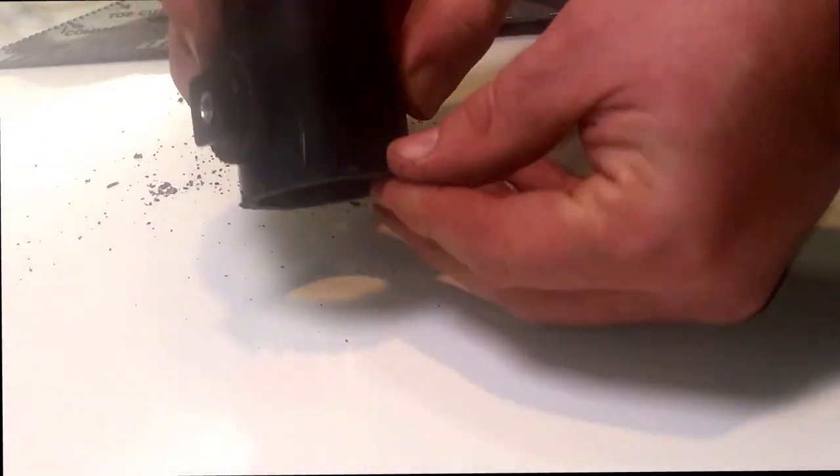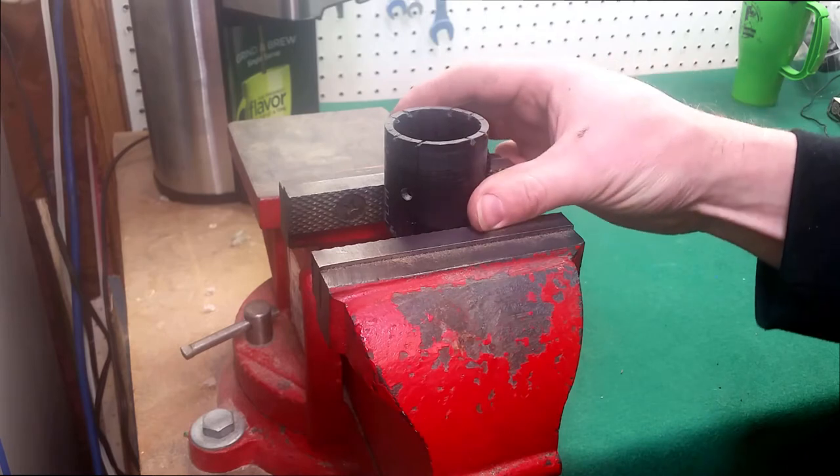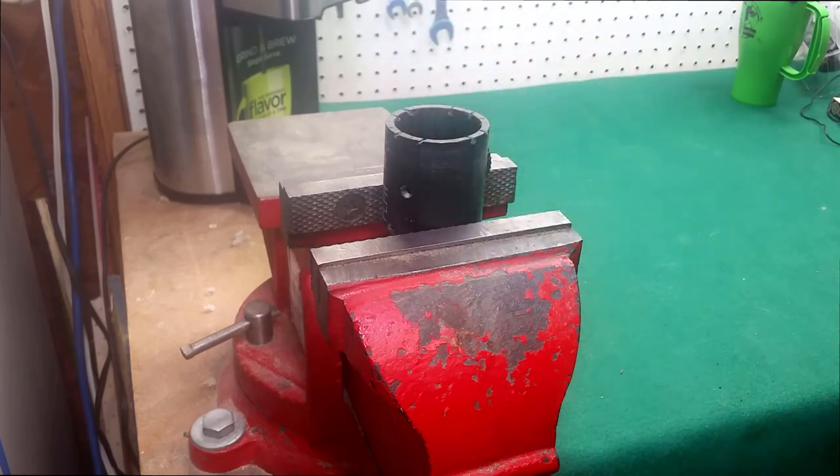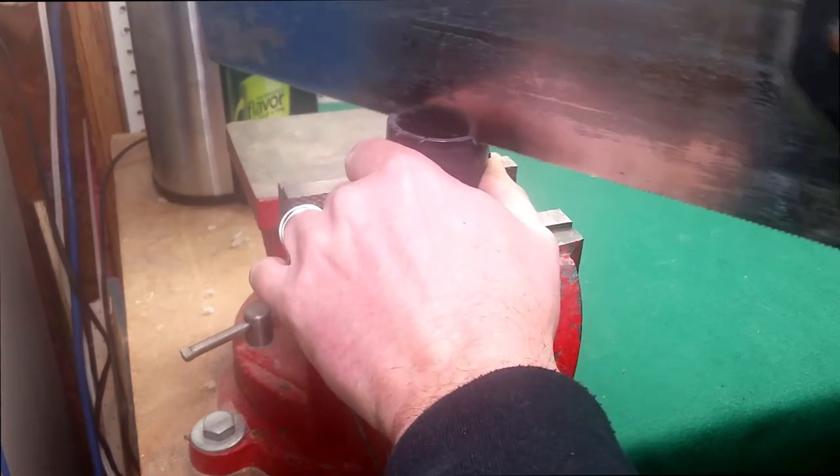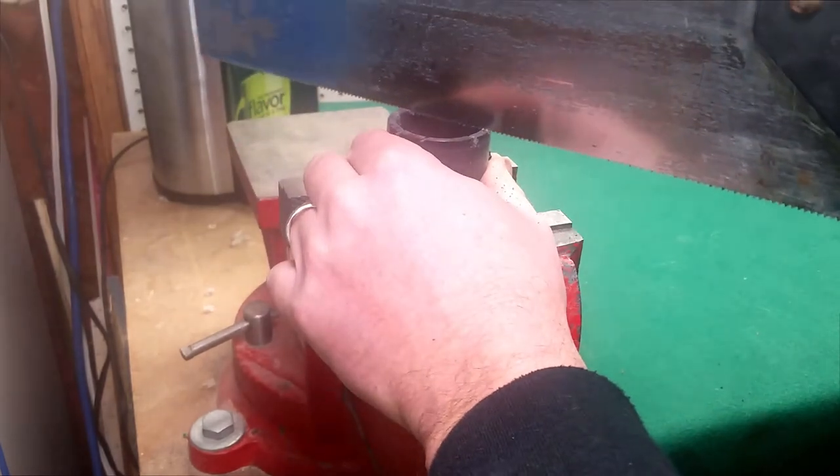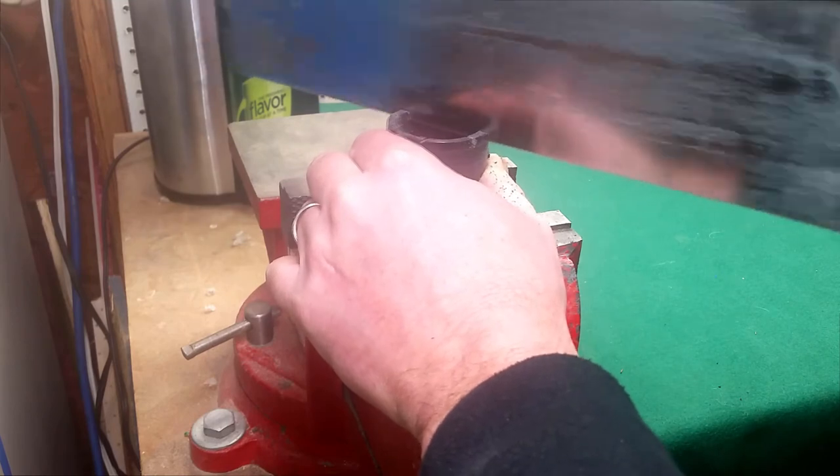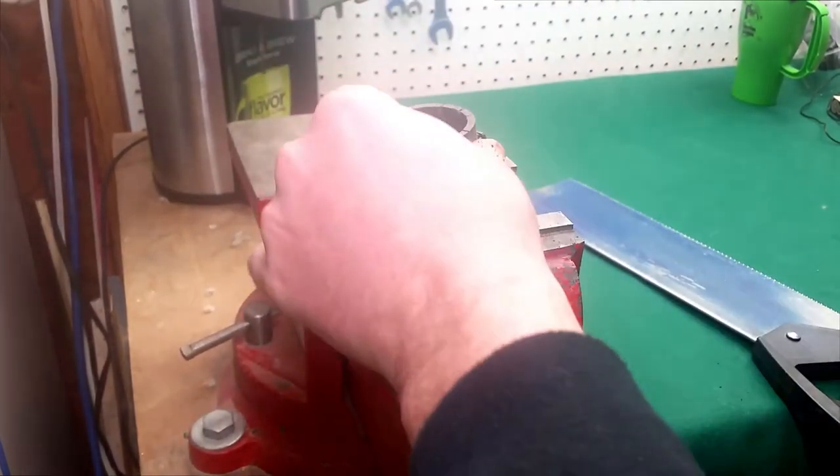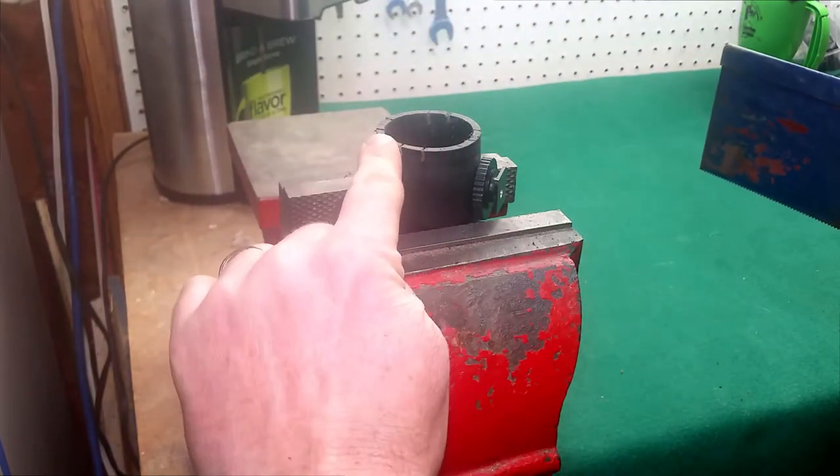Now we're going to put this on the vise for a second. Being cautious to not get that cold shoe caught up in the vise and break it. So I started with a hacksaw, now I'm just going to take a regular saw and finish the work. Don't need to go down terribly far. All we're trying to do is make a spot for the rubber bands to fit. Those rubber bands are going to fit in these little grooves here.